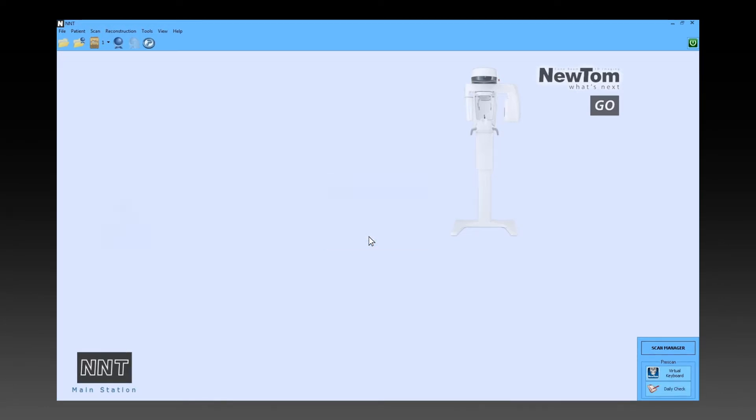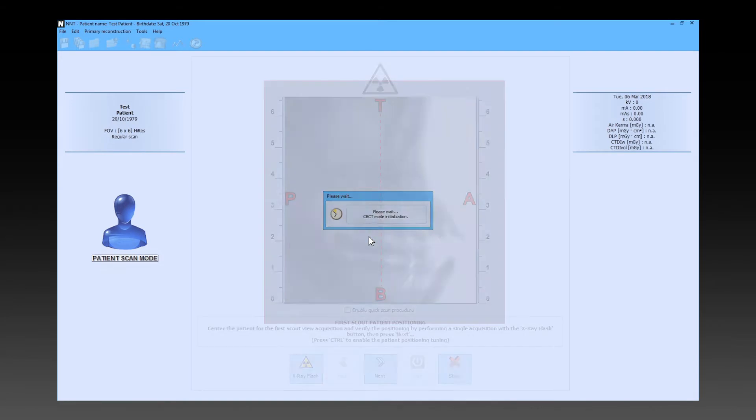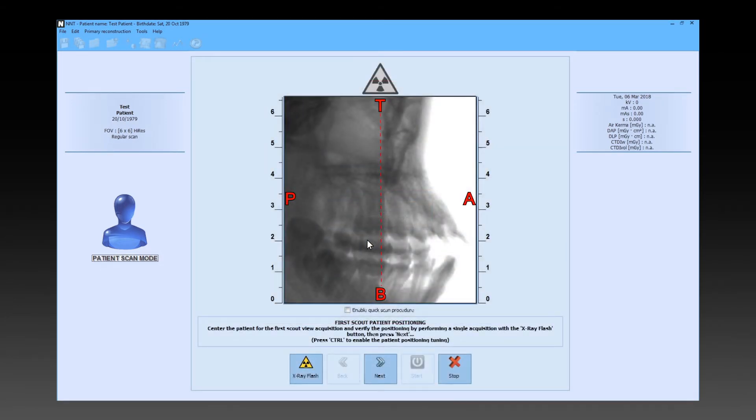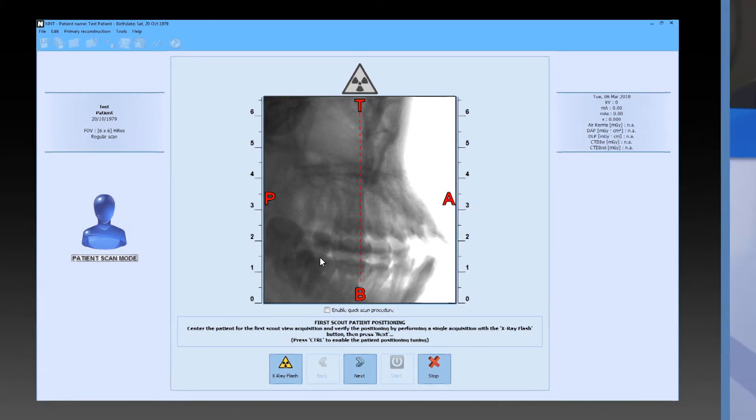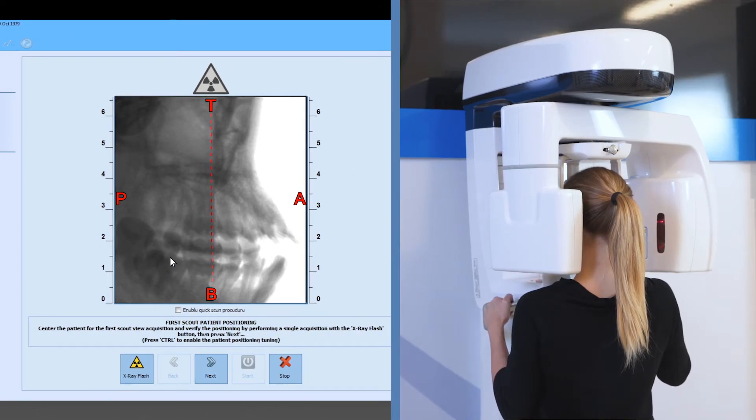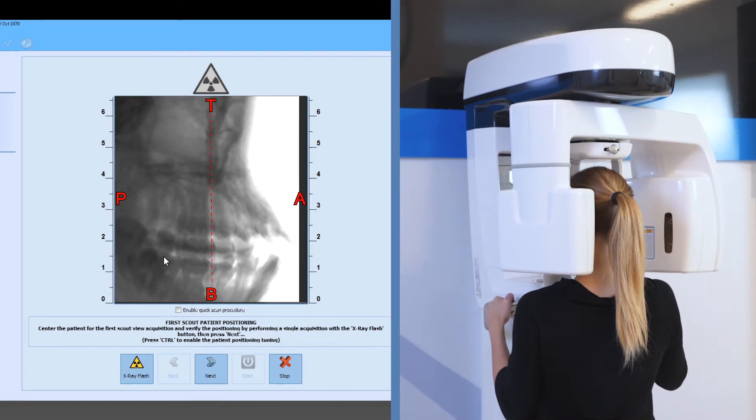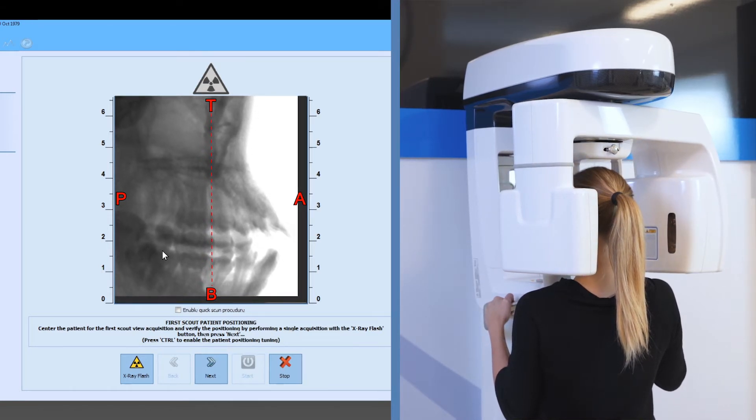Using NNT, scout images are captured that allow the patient's antero-posterior position to be adjusted within the field of view. By holding down the control key and moving the image with the mouse, the patient's position can be accurately adjusted.